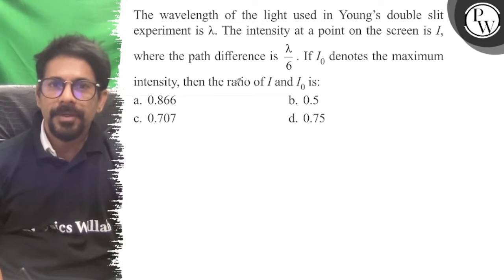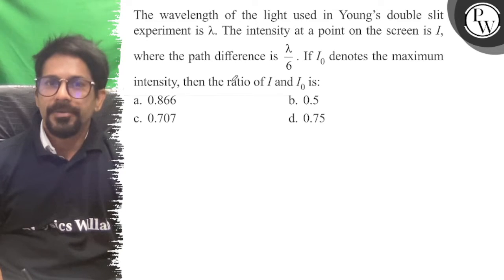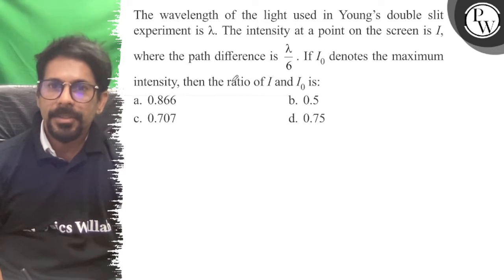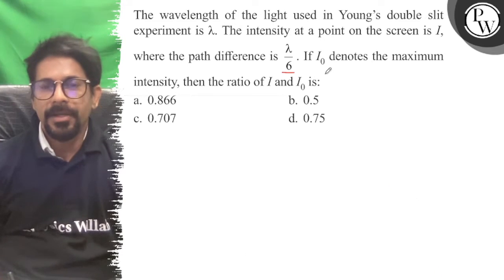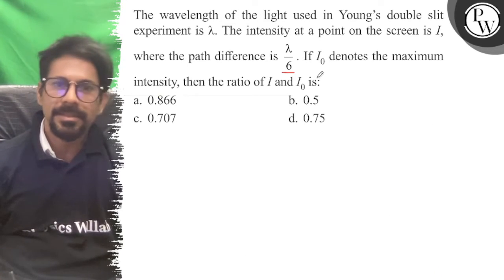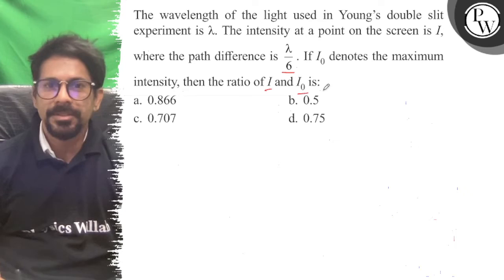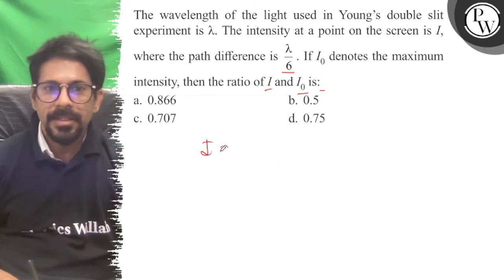Hello bachelor, let's see the question. The wavelength of the light used in YDSE experiment is lambda. The intensity at a point on the screen is I, where the path difference is lambda by 6. If I₀ denotes the maximum intensity, then the ratio of I and I₀ is, so we know that I